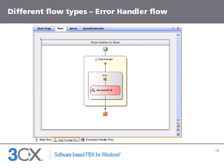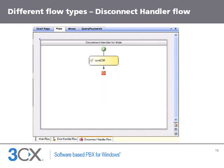If an error occurs in a call flow or a custom component, the execution continues on the error handler flow. If that error handler cannot handle the error, then the error handler of its parent is executed. For example, if you have a database access error but your error handler only contains a branch for external code execution errors, then the execution continues on the error handler of the parent document. If the call gets disconnected, the execution continues on the disconnect handler flow of the document, then the disconnect handler flow of its parent is executed, and so on until executing the disconnect handler of the call flow that received the call. If an error occurs when executing the disconnect handler, the error handler is executed.